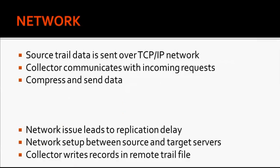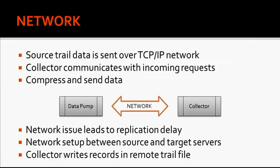The next component of Golden Gate architecture is the network. Data pump sends the source trail data over the TCP/IP network to the target server. On the target side, the collector process communicates with incoming extract process requests. The collector process is dynamic and starts automatically when there is any incoming request on the target server via the network. During data transmission, we can even compress the data to reduce the bandwidth. Any network issue will lead to delay in data transfer, which in turn leads to replication delay. Before you configure Golden Gate, make sure the network is already set up between source and target servers. The collector runs on the target server in the background and writes records to remote trail files.